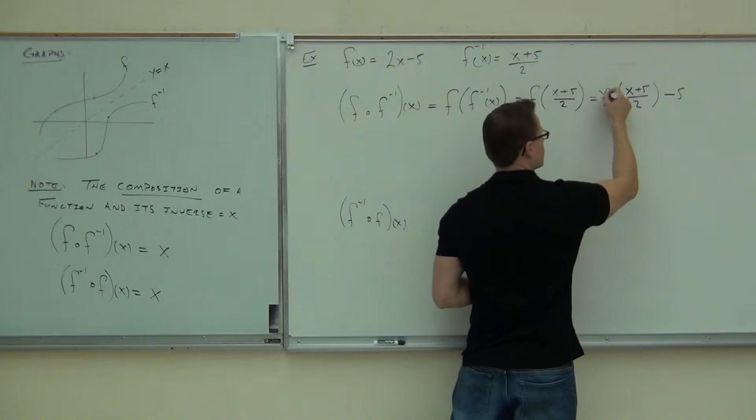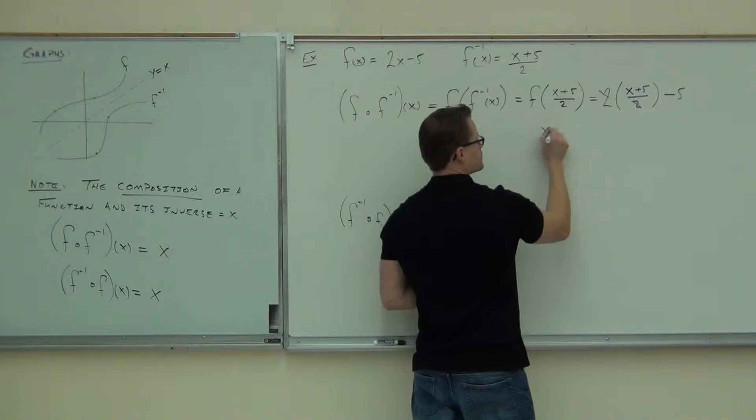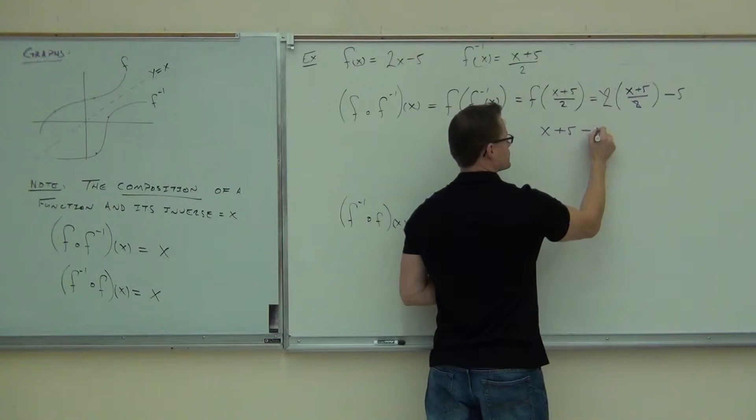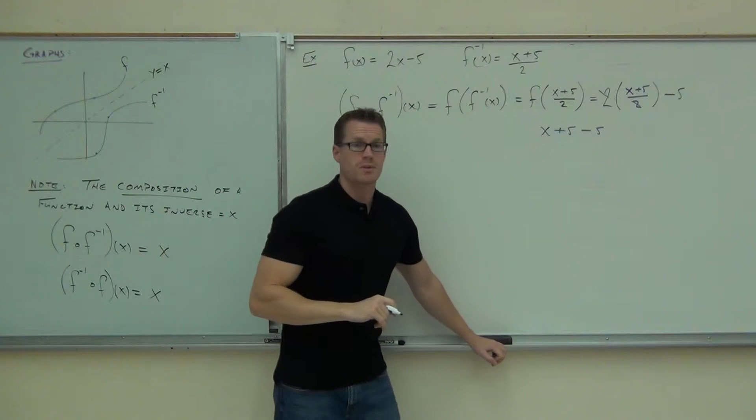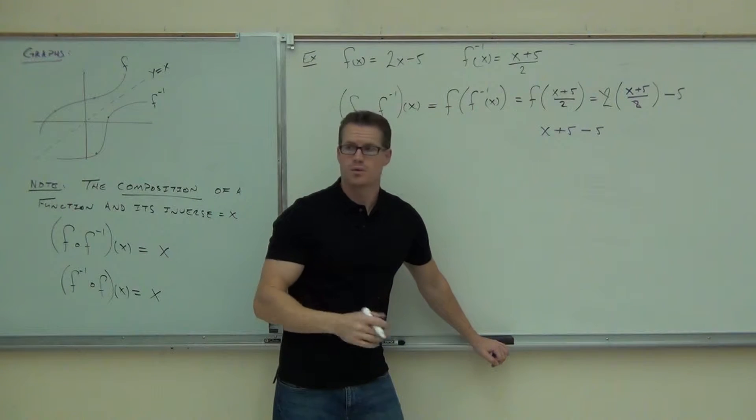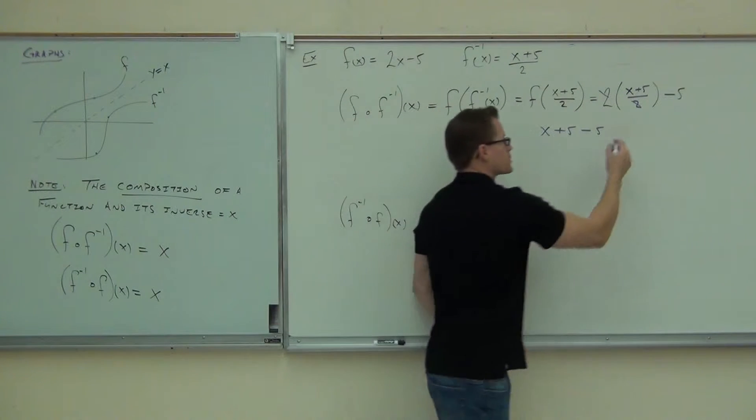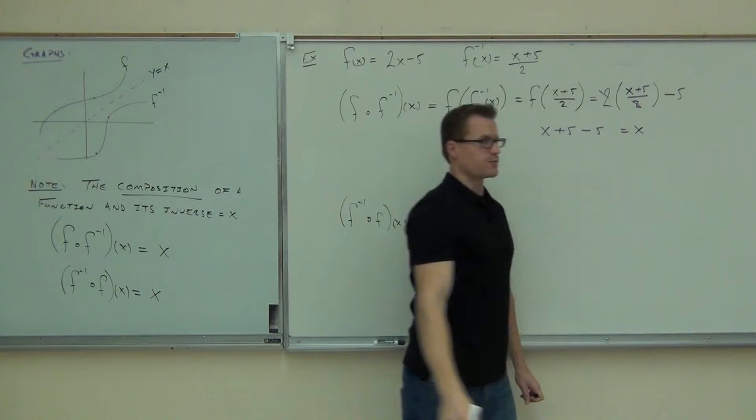2's are gone. You get x plus 5 minus 5. 2's are gone. What happens to the 5's? What do you get? So, are these things in fact inverses?